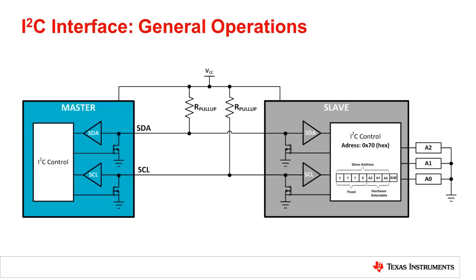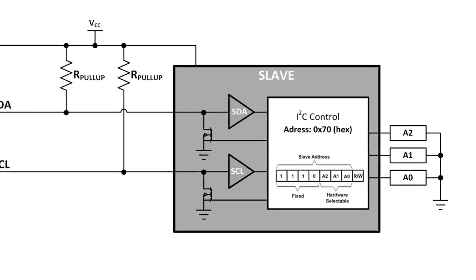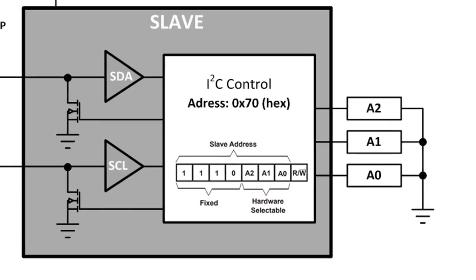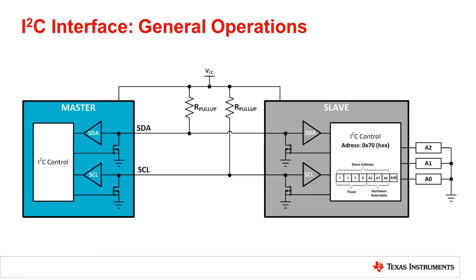A slave may not transmit data unless it has been addressed by the master. Each device on the I2C bus has a specific device address to differentiate between the other devices that are on the same I2C bus.